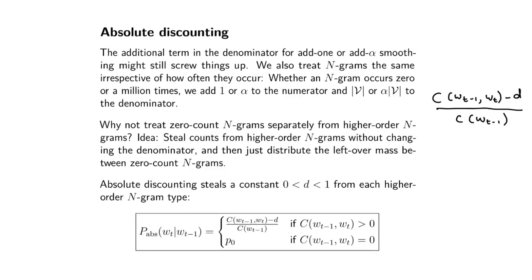Then gather up all the mass. Collect it all, and for everything that occurs zero times exactly, give the same mass P0, which came from stealing from the non-zero counts.